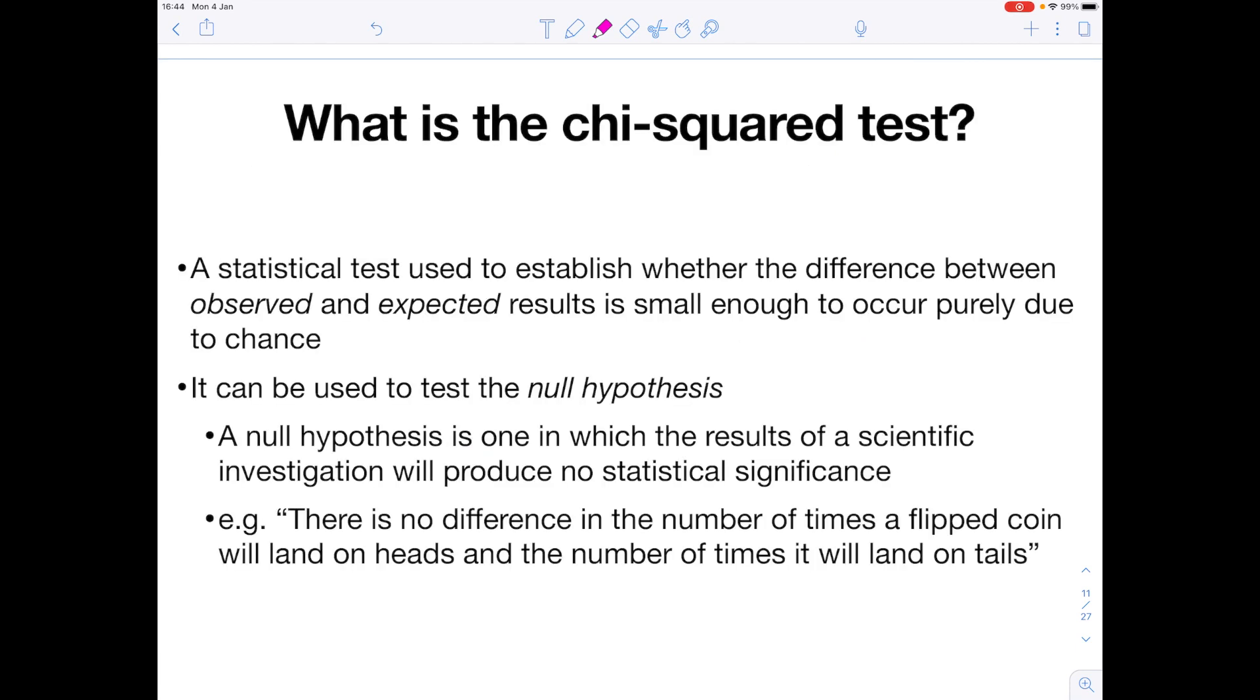So let's first of all look at what the chi-squared test is. It's a statistical test used to establish whether the difference between observed and expected results is small enough to occur purely due to chance. It has to be used where we have a particular outcome that we expect and we have a list of observations. We're looking to see if those observations are different from the expected results due to random chance or because there is a significant difference.